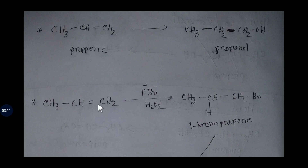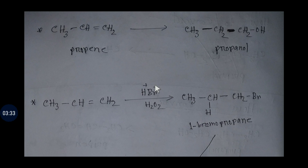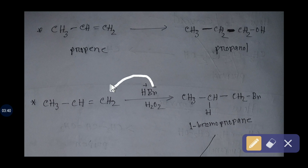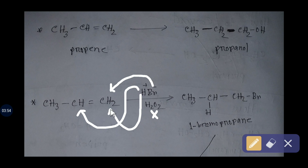Now we will learn how to convert propene to propanol. We take propene and add hydrogen bromide in the presence of peroxide. As a result, the anti-Markovnikov effect applies — the negative part of HBr (bromine) goes to the terminal carbon, and hydrogen adds to the other carbon. Without peroxide, hydrogen would go to the terminal carbon and bromine to the internal carbon.